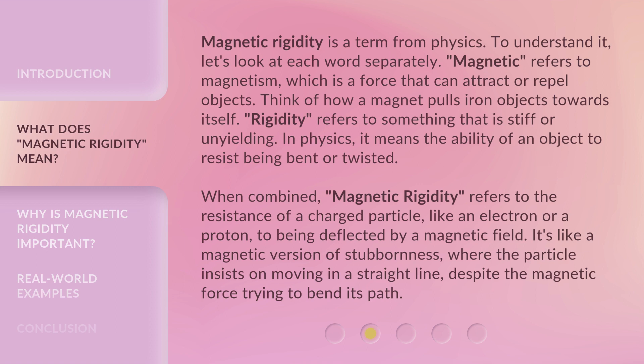When combined, magnetic rigidity refers to the resistance of a charged particle, like an electron or a proton, to being deflected by a magnetic field. It's like a magnetic version of stubbornness, where the particle insists on moving in a straight line, despite the magnetic force trying to bend its path.